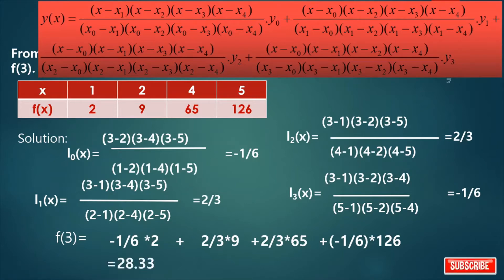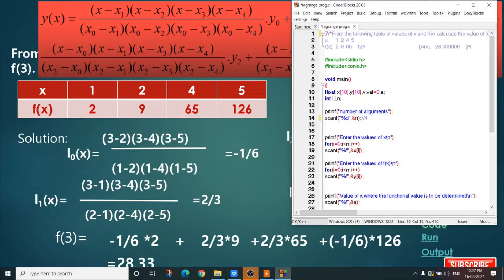Now see the coding. This is the coding for Lagrange's interpolation formula. There are two float arrays: one is x and another is y, for storing x values and y values.